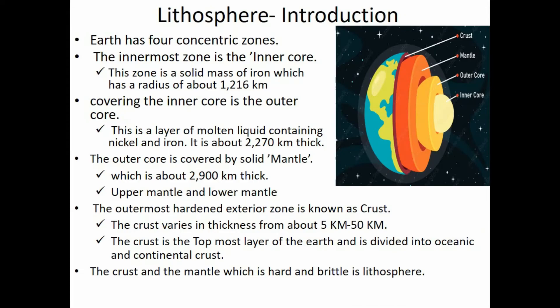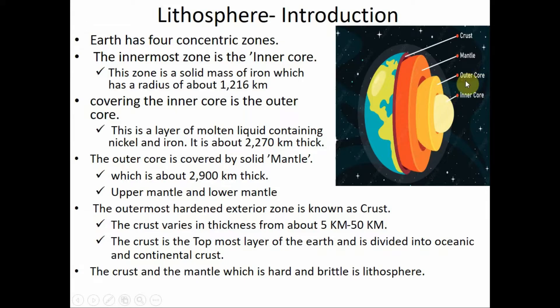The earth has four concentric zones. The innermost zone is called the inner core and consists of a solid mass of iron, with a radius of about 1216 kilometers. Covering the inner core is the outer core, which is a layer of molten liquid containing nickel and iron, and is about 2270 kilometers thick.